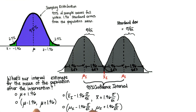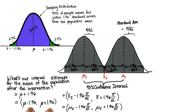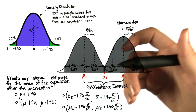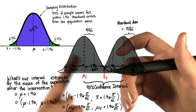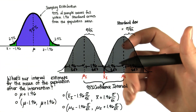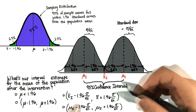Here we're getting a little closer because now we have an interval, but as I said before, it doesn't make sense to just subtract a z-score, because this is the number of standard deviations away from the mean. So we want to find the value along the x-axis for this interval.